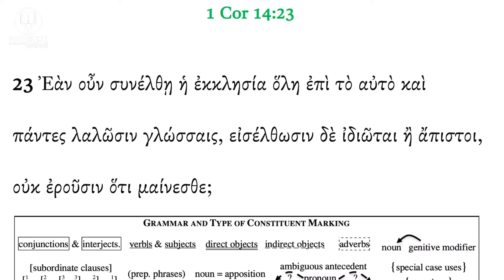Let me read the text and then do some marking, and I'll try to explain that for those who might be listening only. Ean — there are two connectors. Ean is a subordinating conjunction meaning 'if,' and oun is a coordinating conjunction indicating a new development and an inference being drawn — 'so, therefore, if.' And then we have ekklesia holon — ekklesia holon is single underline, meaning 'the whole church.'